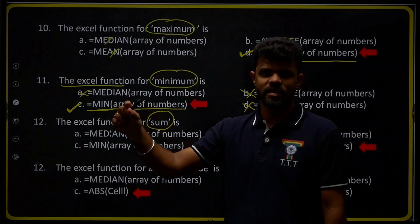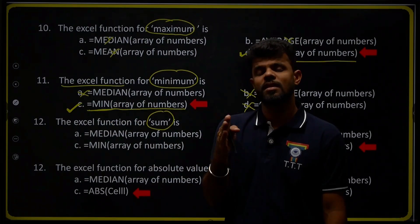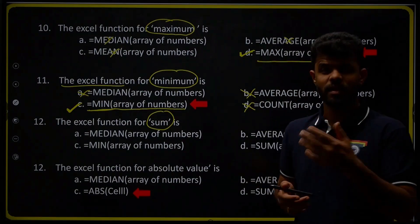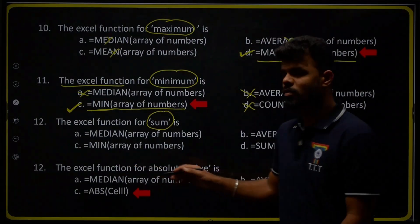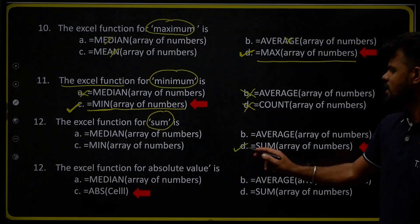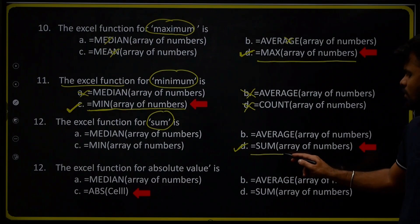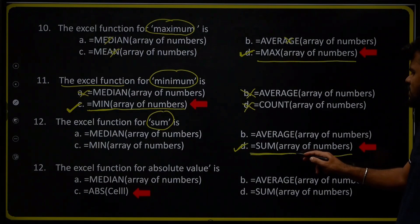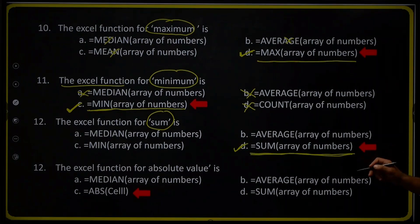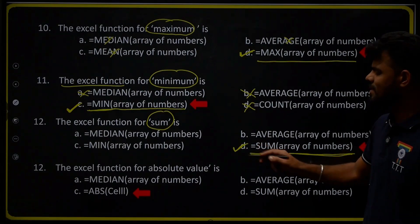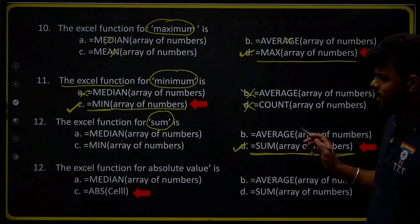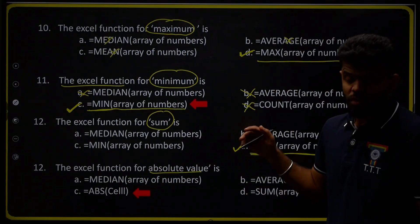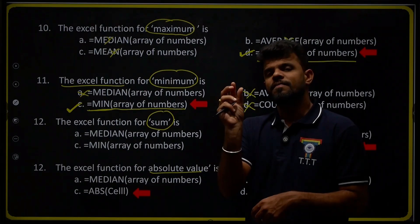Question number twelve: the Excel function for SUM. To add numbers across selected cells we apply =SUM(array of numbers). Therefore option D is the right answer.